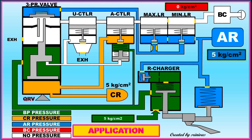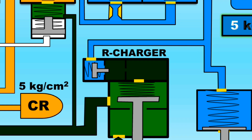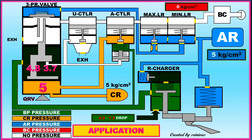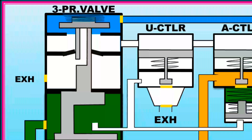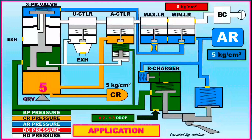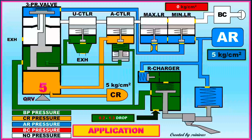Application stage. Now let's see how the application is done. When BP is dropped from 0.2 to 1.3, the connection between BP and AR will be disconnected. At the same time, pressure variation occurs in the 3-pressure valve. Then, the BP pressure in the 3-pressure valve goes to the U controller and A controller. Then the U controller drops more BP pressure.